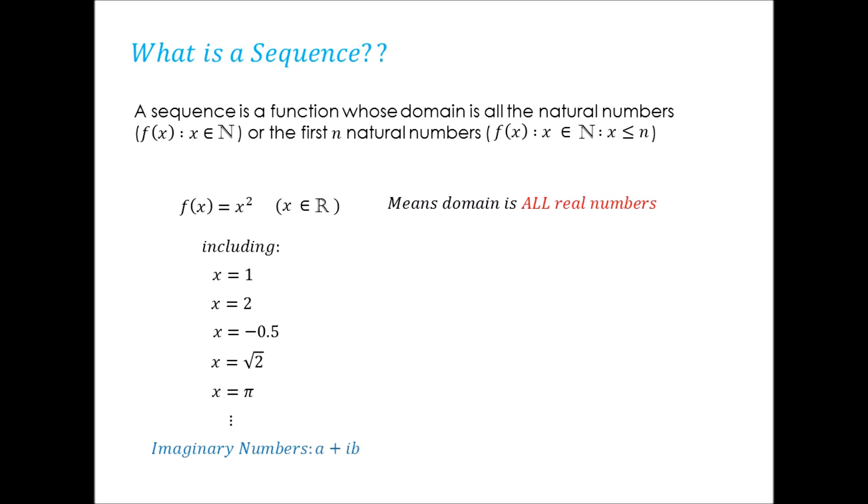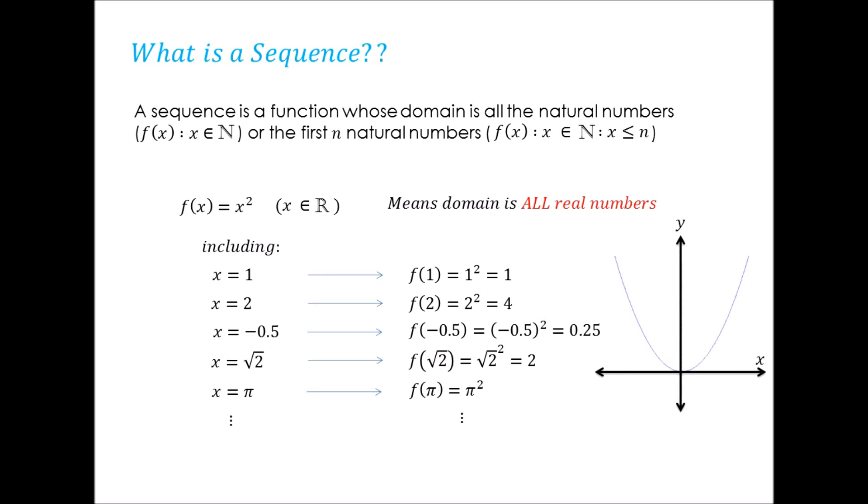Anything but imaginary numbers. And for every real value number, we have exactly one output value. We have 1² or 1 for f(1), 2² or 4 for f(2), (-0.5)² or 0.25 for f(-0.5), 2 for f(√2), and π² for f(π), and so on. Plotting the following curve on our Cartesian coordinate.